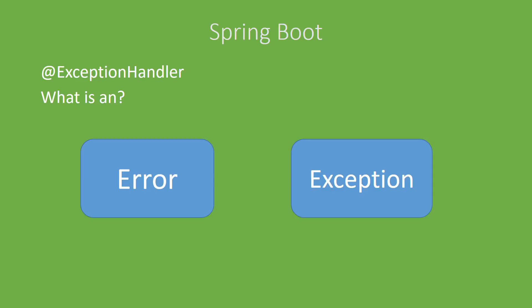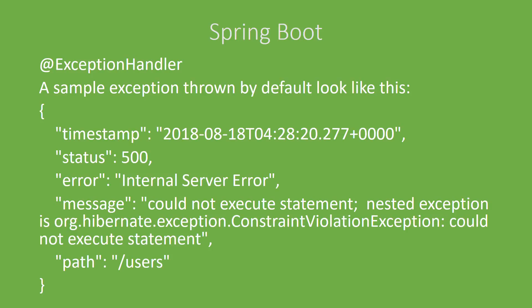Now from the Spring Boot perspective, assume your code hits an exception — what will happen? If an exception occurs and your code doesn't handle it, you actually need not worry, because Spring Boot as a framework provides a default exception handling mechanism. I have a sample exception here, and if you closely observe, you can see a status 500.